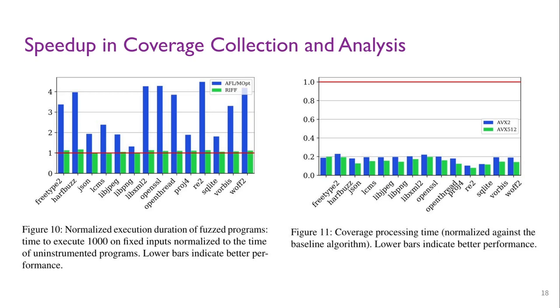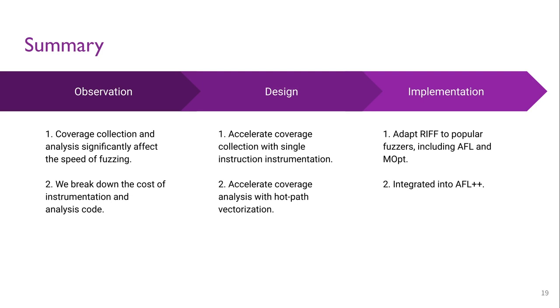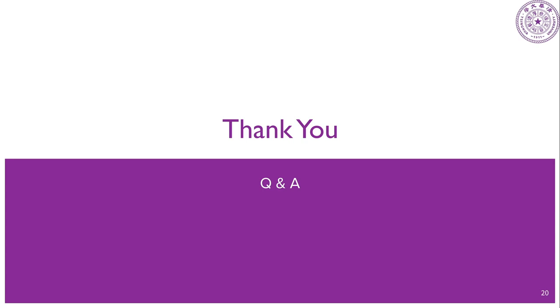To recap, we first observe that coverage collection and analysis significantly affect the speed of fuzzing, and we further break down the cost of instrumentation and analysis code. Next, we design RIF to accelerate coverage collection with single instruction instrumentation and accelerate coverage analysis with hot path vectorization. Finally, we implement RIF on popular fuzzers, including AFL and MOpt. The coverage processing parts of our work has already been integrated into AFL++. That's all. Thank you. Any questions?